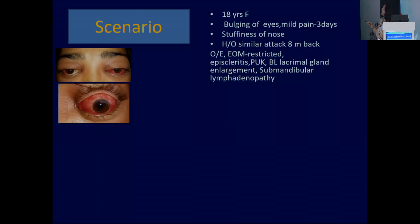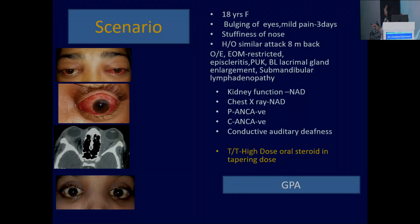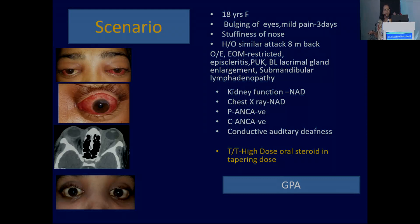Another case scenario: an 18-year-old female came with bilateral diffuse episcleritis-like picture, bulging eye, PUK (peripheral ulcerative keratitis), and bilateral diffuse orbital inflammation. We thought this was also a case of granulomatosis with polyangiitis, but as this was the first attack, C-ANCA and P-ANCA may be negative at the beginning — in only 30% of cases do they become positive. So maybe in future the patient can turn up again with a full-blown picture. You have to advise the patient that there may be a generalized systemic involvement — like kidney function — that you have to test.